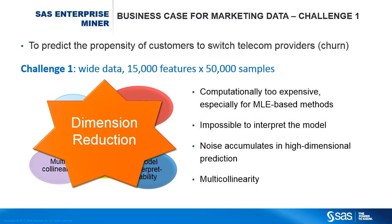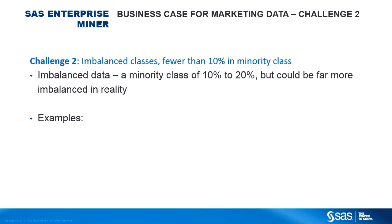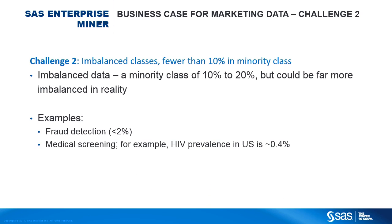After understanding all these problems, the need for dimension reduction becomes obvious. Imbalanced class is also a challenge in this analysis. There are fewer than 10% samples in the minority class. When you see the term imbalanced data in research papers, it usually means the minority class has a portion of 10 to 20%. However, in this project, as well as in many real-world cases, the data can get far more imbalanced. For example, fraud detection identifies frauds that happen in fewer than 2% of all transactions.